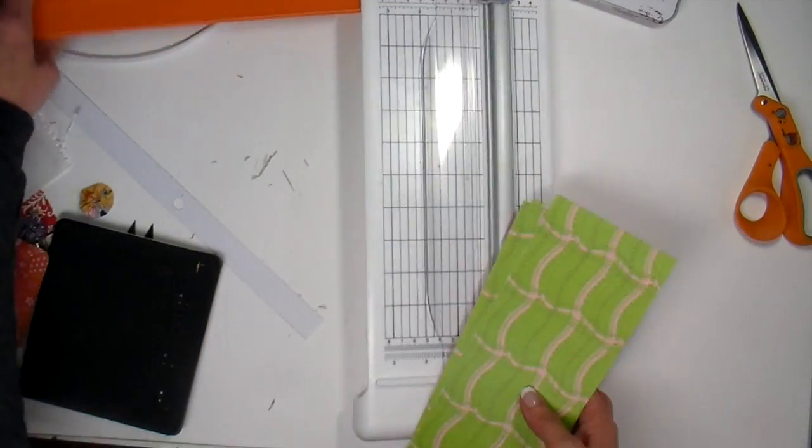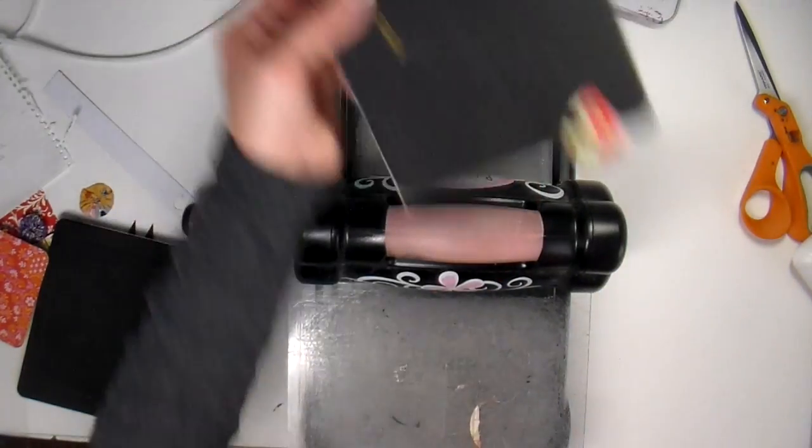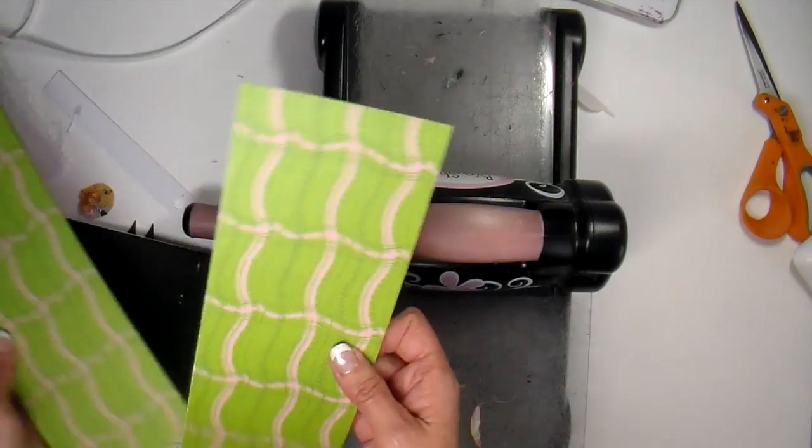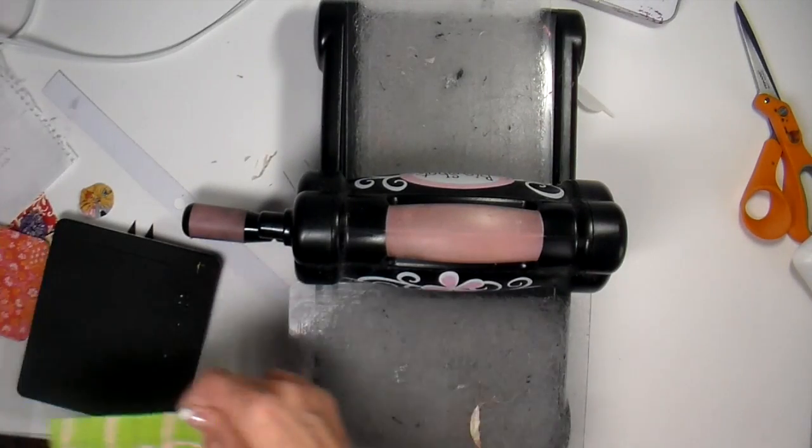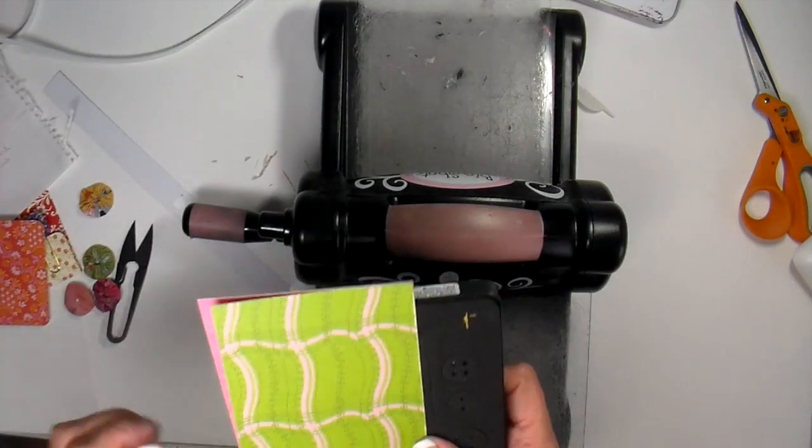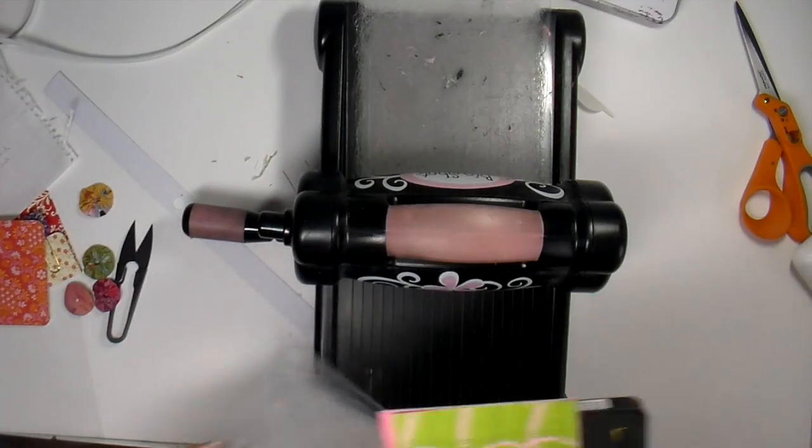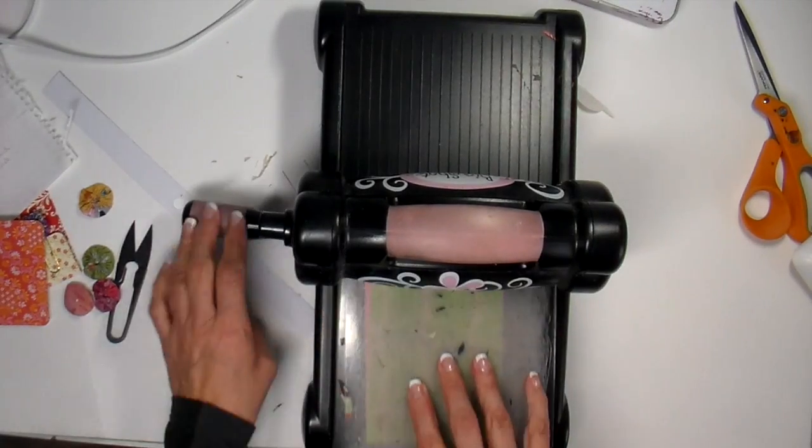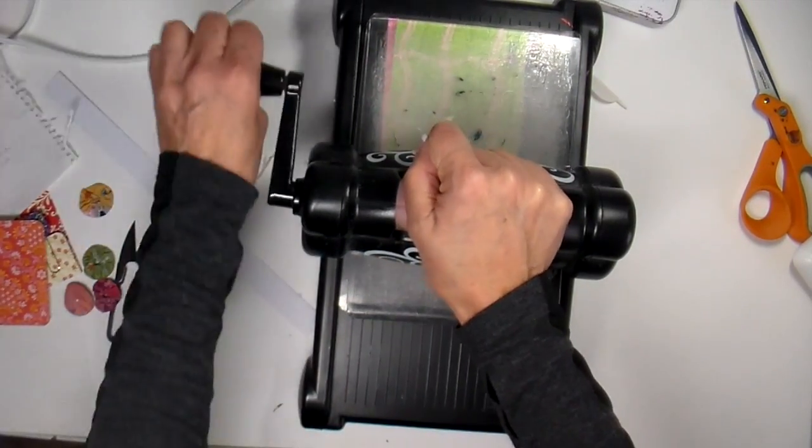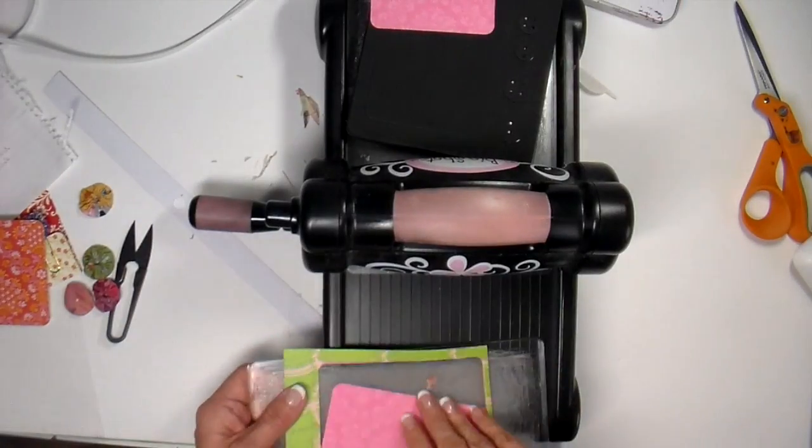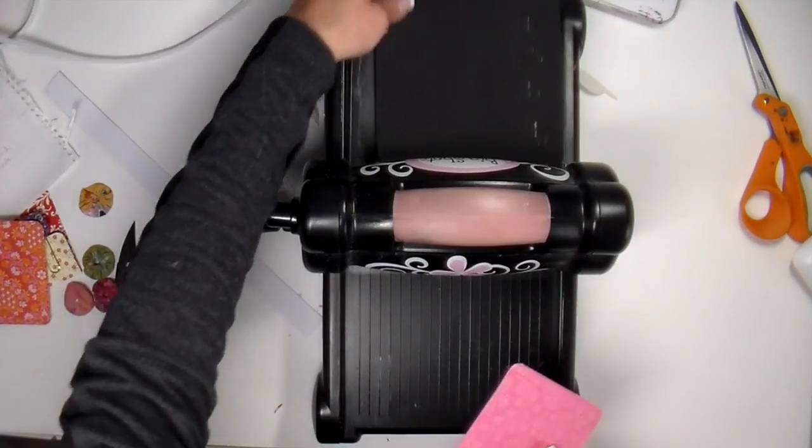Then I can go ahead and bring out my Big Shot again. I can usually cut probably about three layers of this heavier cardstock with this, but I'm going to go ahead and cut two at a time. I just run that through - you're going to hear that cracking noise, it's fine. Okay, two cute little cards.